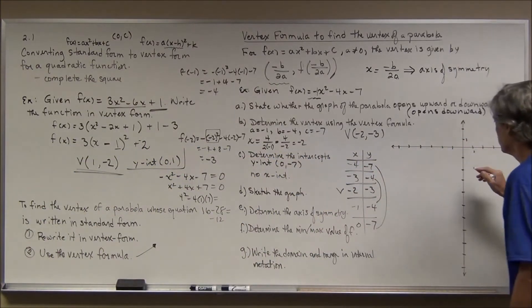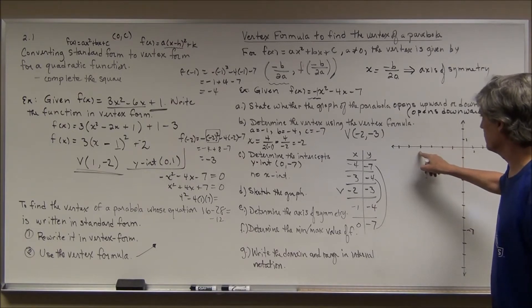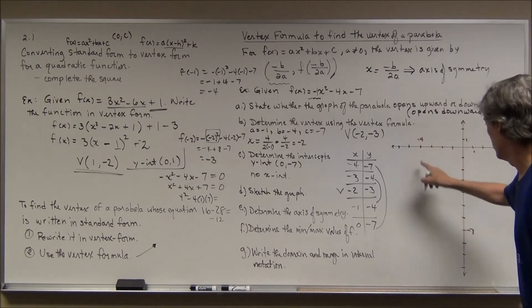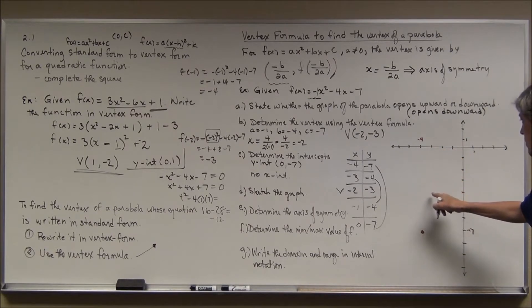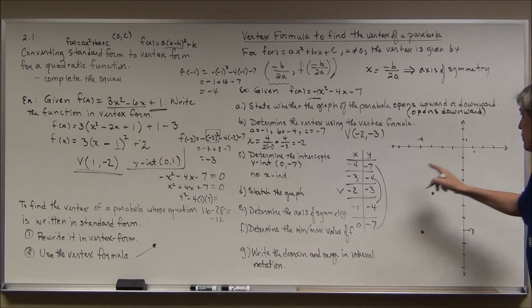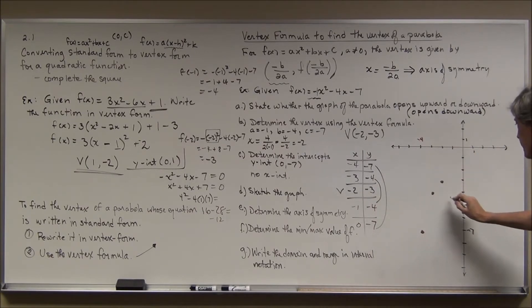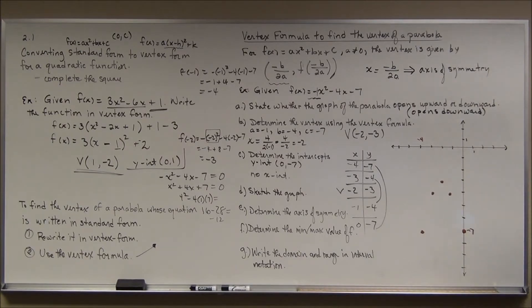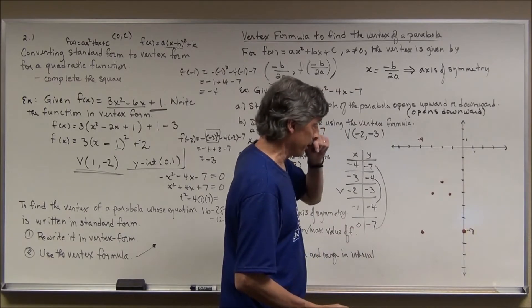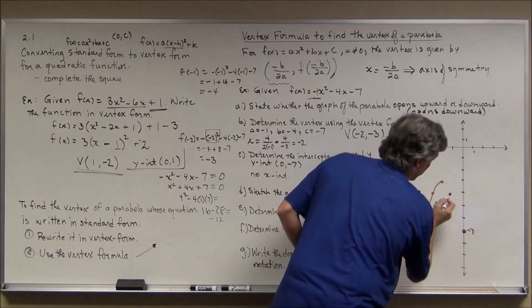The five points are: (-4, -7), (-3, -4), (-2, -3), (-1, -4), and (0, -7). Plotting these carefully — (-2, -3) is the vertex, the points one unit away give y = -4, and two units away give y = -7 — you can see the downward U-shape. That's enough for a reasonable sketch. My sketch won't be perfect without graph paper, but yours will be much better.